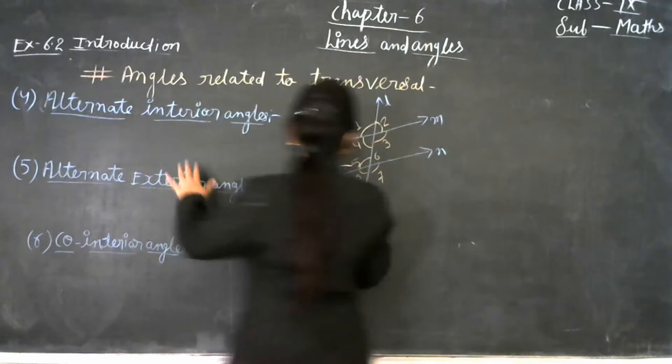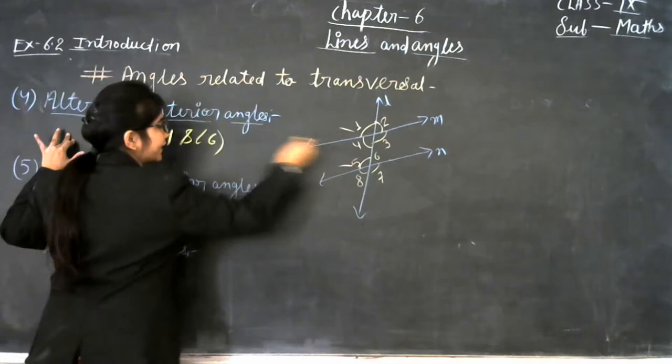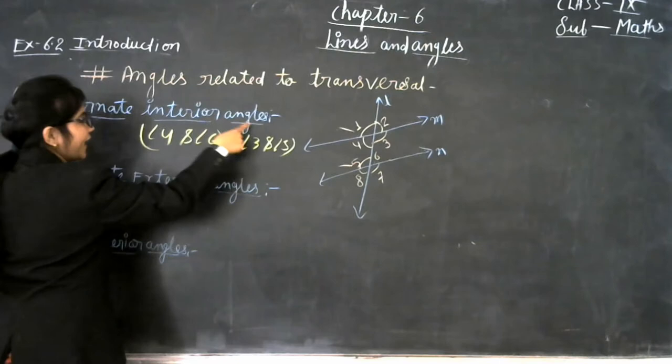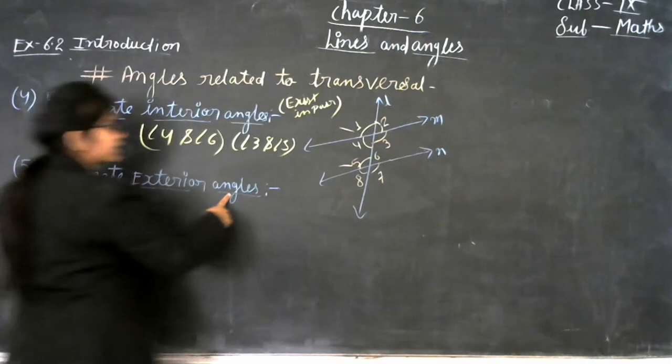The next type is alternate interior angles. Angle 4 and angle 6 are alternate interior angles, and angle 3 and angle 5 are also alternate interior angles. Alternate interior angles also exist in pairs.